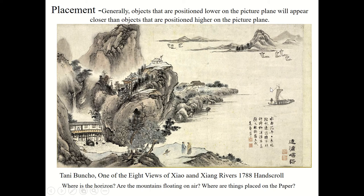Placement is when objects higher up tend to be further off into the distance. As you can see in this work of art, objects further down in the image tend to be closer to us than the objects up on top. This is actually a mountain landscape — you can create this illusion by having the horizontal line way up high. The mountain range at the top of the paper seems to be receding further away than the objects down here, so placement also gives you the illusion of space.